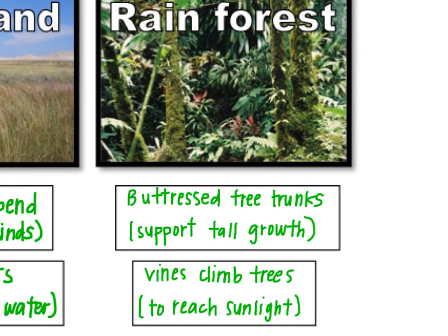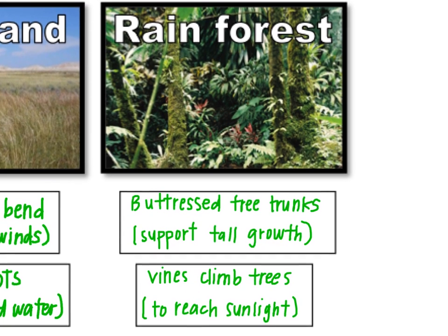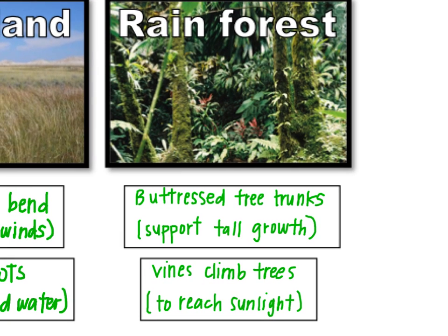In the rainforest, rather than trying to conserve water, the thing that's scarce is sunlight. So a lot of plants have adaptations to help them gather sunlight. One of the things that many rainforest trees have is a buttressed tree trunk — a shape that has a very wide base and gets narrower towards the top. That allows them to grow very tall, giving them good support at the base so they can reach the sunlight at the top of the canopy.